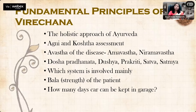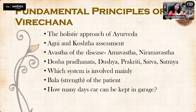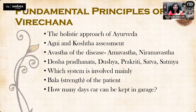Avastha of the disease is very important. In Aam Avastha, Virachana cannot be done — it should be Nirama Avastha. Acute phase is also a contraindication. Doshya Pradhantha must be assessed at every stage. Today's lecture will discuss what stage, which Doshya Pradhantha, which Dushya is involved, the Prakriti, Sattva, and Satmya of the patient — because not assessing these will lead to complications.